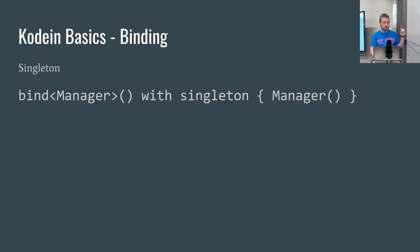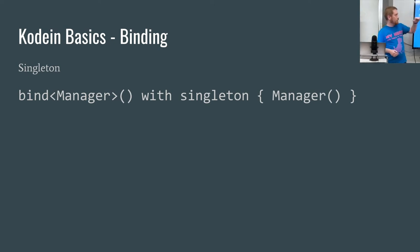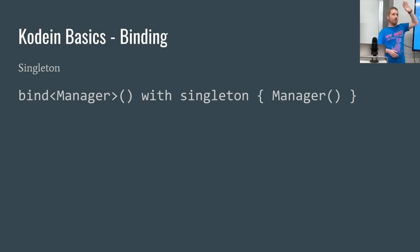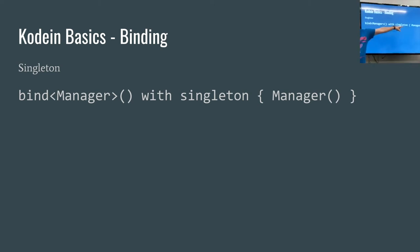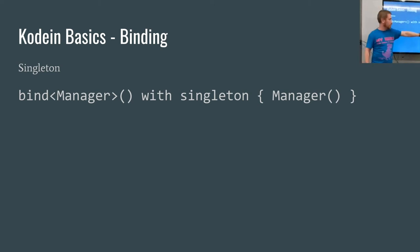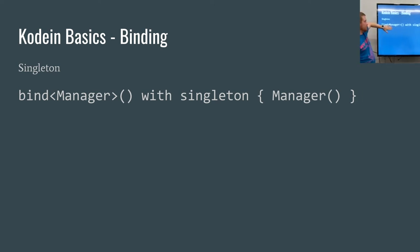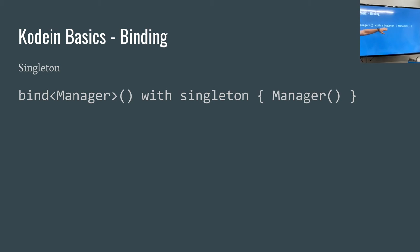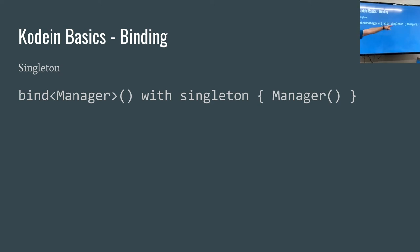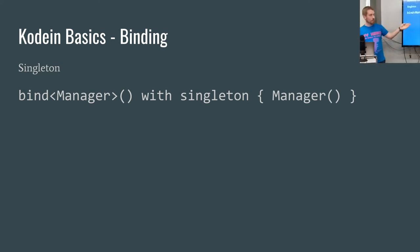The basics of binding: the whole idea with any dependency management framework is to have a thing that you need and define how to get that thing. This is the implementation of the manager, this is the definition of how to get it, and this is how it's bound inside Kodein. A singleton means you're only going to get one of it — per Kodein instance, there will only ever be one manager, and anything that needs a manager bound like this will get exactly that.